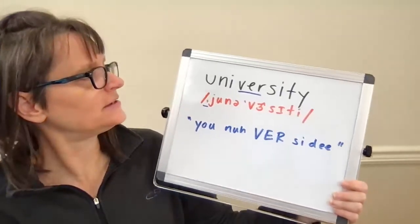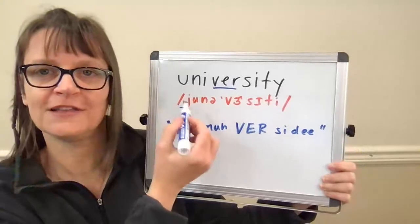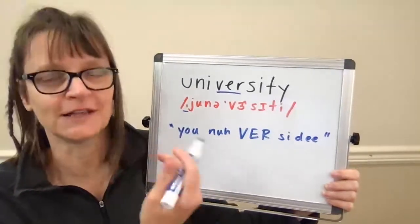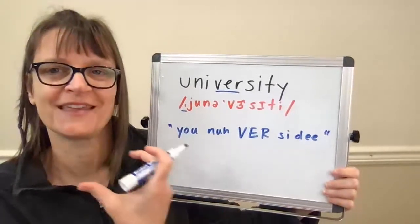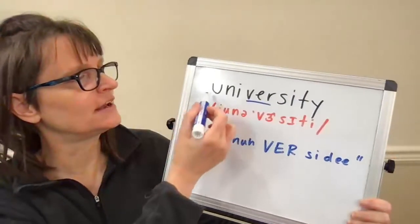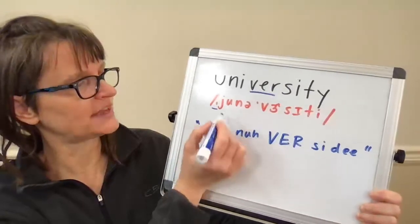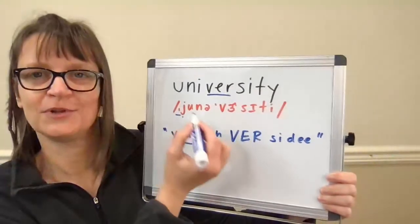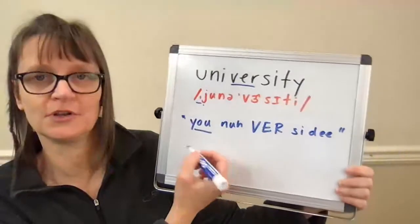Looking at the letter U — unlike some words that begin with UN, like 'unlike,' where UN is a prefix — in 'university,' the letter U says the U sound. So there's a glide plus the U sound, just like in the word 'you.'